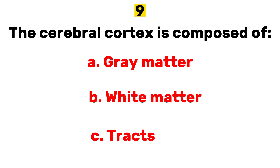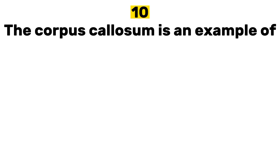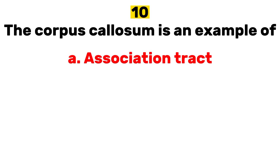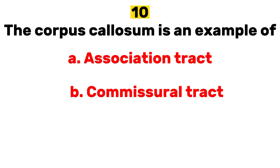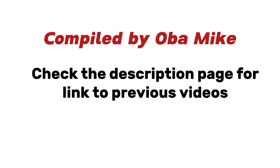Answer: a) gray matter. Number ten: the corpus callosum is an example of — a) association tract, b) commissural tract, c) projection tract. Answer: b) commissural tract.